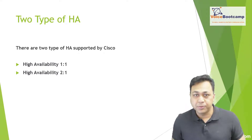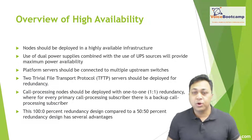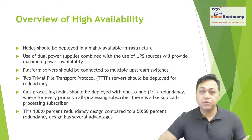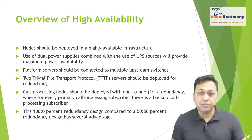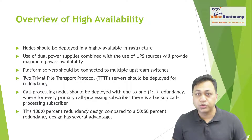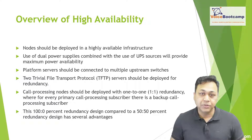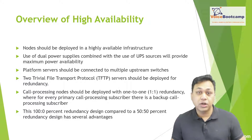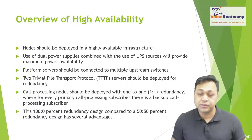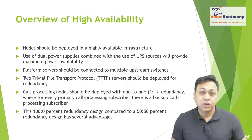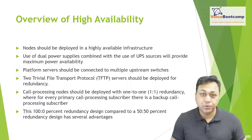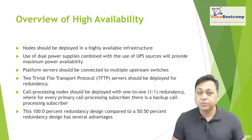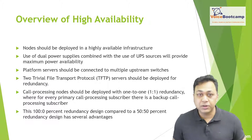There are two types of high availability supported by Cisco: a one-to-one ratio or a two-to-one ratio. Nodes should be deployed in a high availability infrastructure. Use of dual power supply combined with external UPS source will provide maximum power availability. You want to ensure that your platform servers are connected to multiple upstream switches, so that if one switch goes down you have a backup. You should also use at least two TFTP servers deployed in a pool for redundancy.